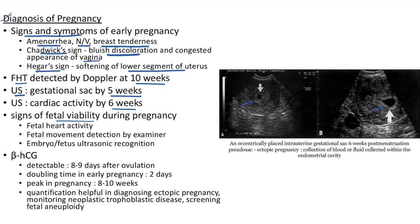The signs of fetal viability during pregnancy are fetal heart activity, fetal movement detection, and embryo or fetus ultrasonic recognition. Regarding beta-HCG, it is detectable 8 to 9 days after ovulation. The doubling time in early pregnancy is 2 days. It peaks at around 8 to 10 weeks. HCG quantification is helpful in diagnosing ectopic pregnancy, monitoring neoplastic trophoblastic disease, and screening for fetal aneuploidy.